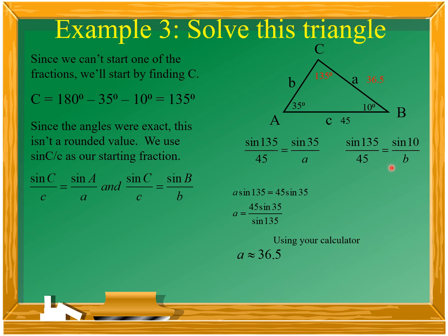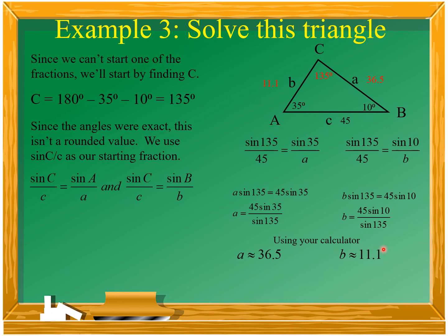Next, for the value of b, substitute the values: sin 135° over 45 equals sin 10° over b. Cross multiplication: b times sin 135° equals 45 times sin 10°. Divide both sides by sin 135°. We get b equals 45 times sin 10° all over sin 135°. Using your scientific calculator, what is the value of b? It is 11.1.